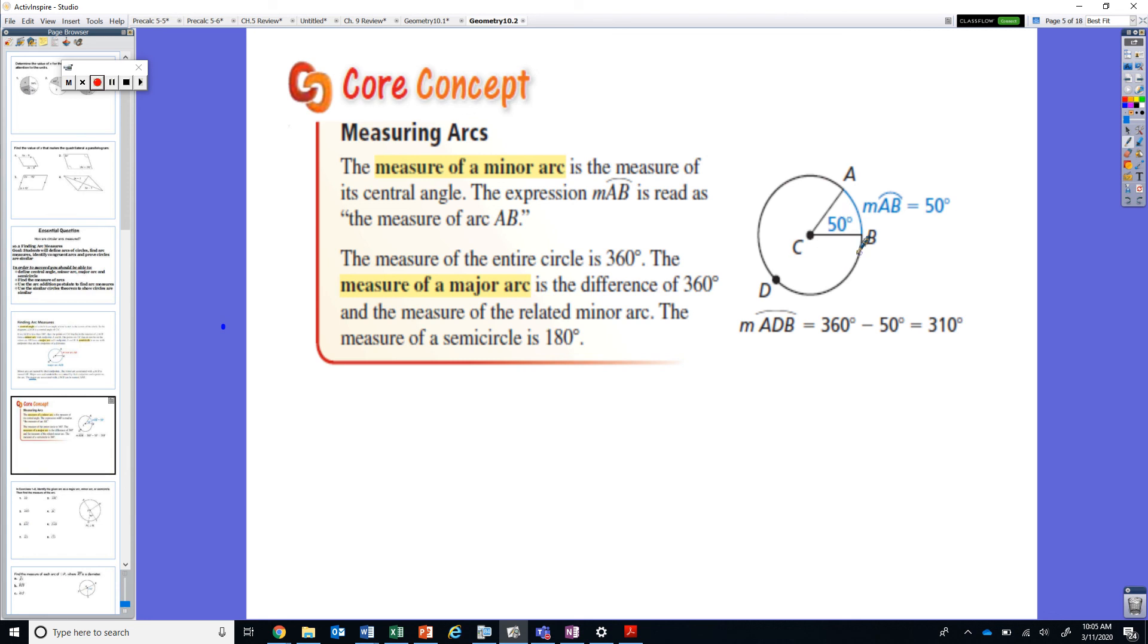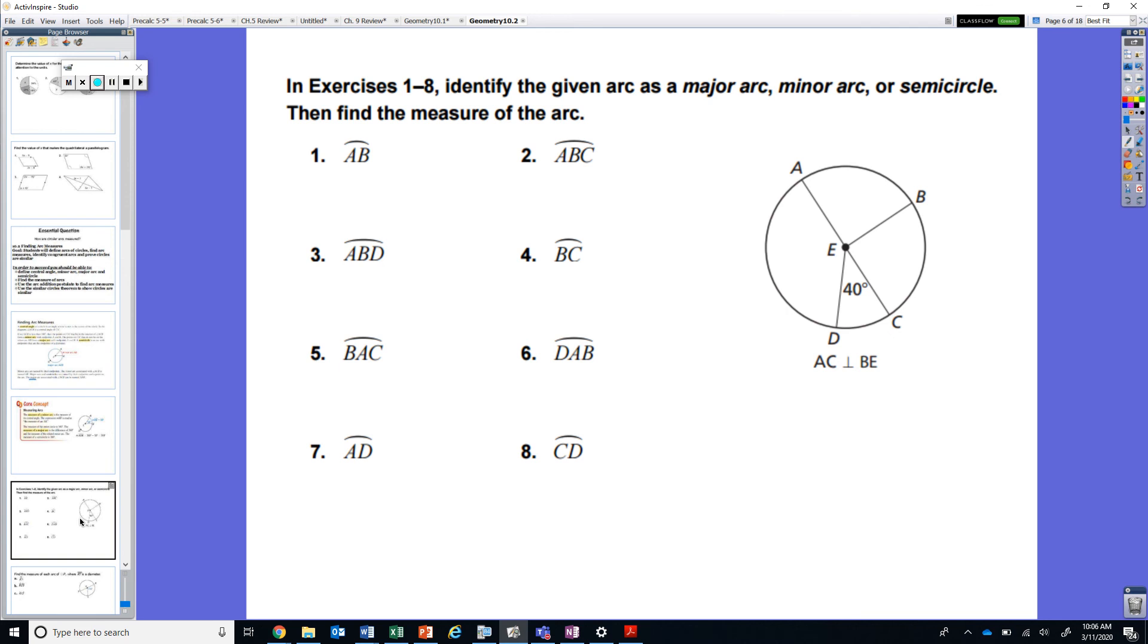Now don't think that you're only going to see two arcs like we do here, you are going to see things that are split up into a lot of different arcs. So let's take a look here at some examples. Identify the given arc as major, minor, or a semicircle and then find the measures of the arc. So let's take a look at arc AB. So first and foremost we have this arc AB that we are looking at here. We also have some information that AC and BE are perpendicular. Well this tells me that these are 90 degree angles. So if this central angle is going to be 90 degrees, this arc, minor arc, is going to also be 90 degrees and it is a minor arc.